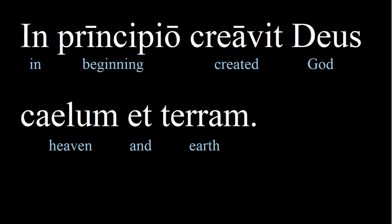Even if you haven't read the Bible, you've probably heard this line: 'In the beginning, God created the heaven and the earth.' The word principio means 'beginning' — you can associate this with 'first principle' — and creavit is the perfect past tense of creare, and the connection to 'create' is pretty clear. Why is it the perfect past tense? Because it happened once and was completed.